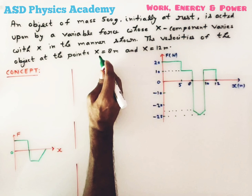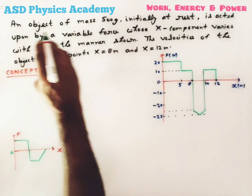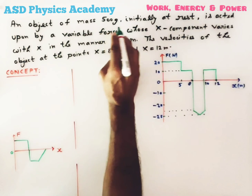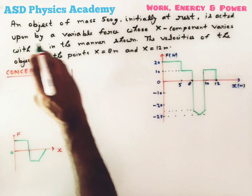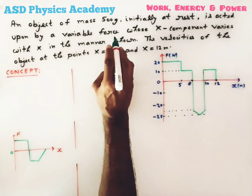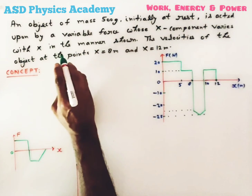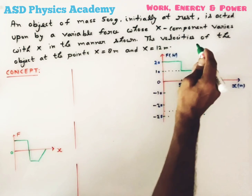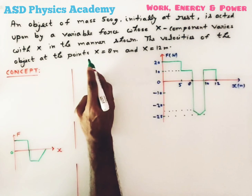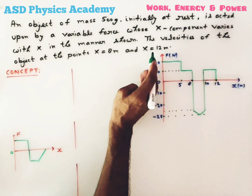Hello my dear students, welcome to ASD Physics Academy. Today's question is: an object of mass 500 grams, initially at rest, is acted upon by a variable force whose x-component varies with x in the manner shown in the diagram. The velocities of the object at the points x equal to 8 meters and x equal to 12 meters will be?